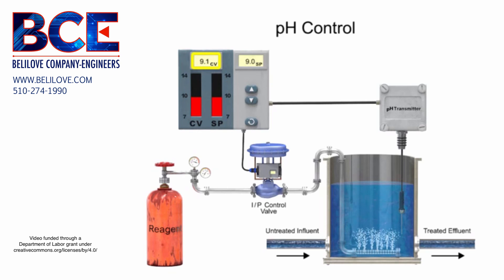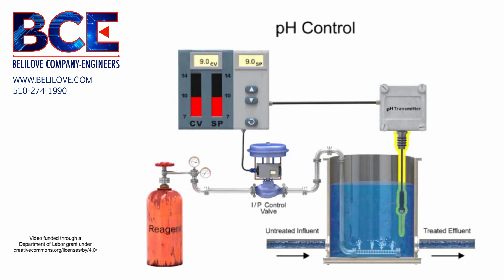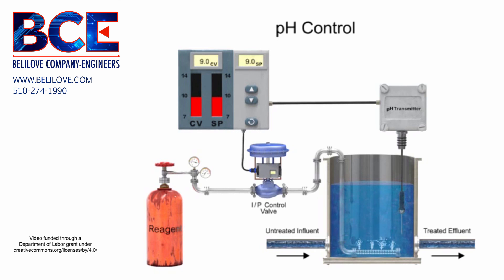Reaching the setpoint, the carbon dioxide flow is minimized and the process is continually monitored for variation. The effluent is the treated water that is discharged out of the tank. The process continues to provide the lime-softened water at the desired pH level.